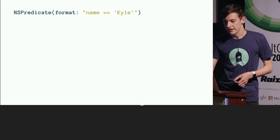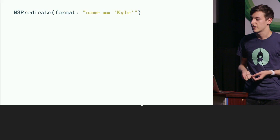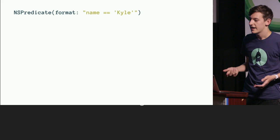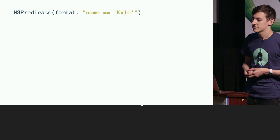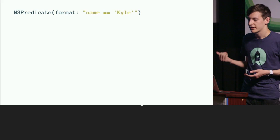NSPredicate looks something like this. We create an NSPredicate instance and pass a format string — in this case we're querying for everything with the name Kyle. Now you can pass this to NSFetchRequest, and CoreData will translate this to SQL because it's not tied to implementation details. It can also be applied to NSArrays to filter them by this query.